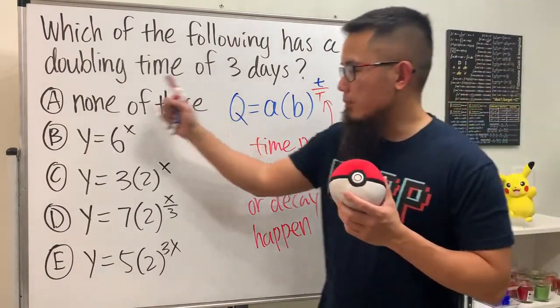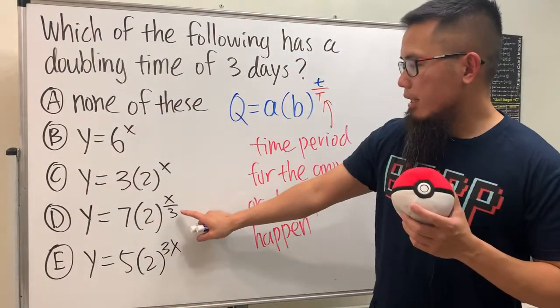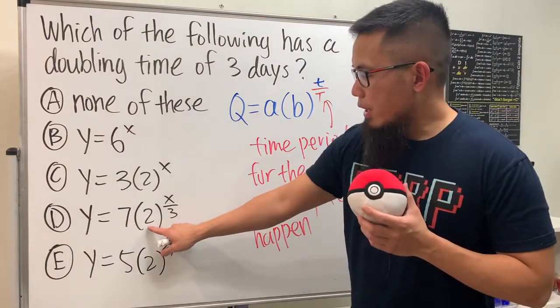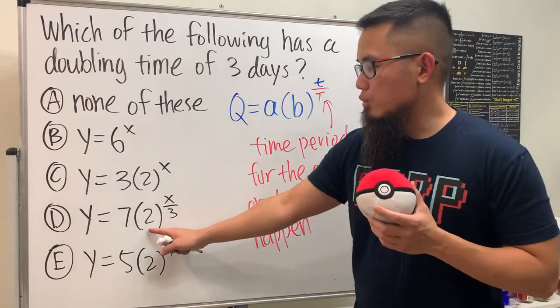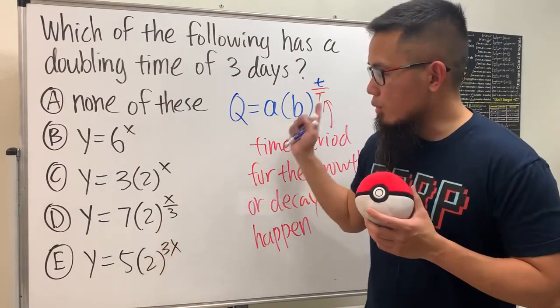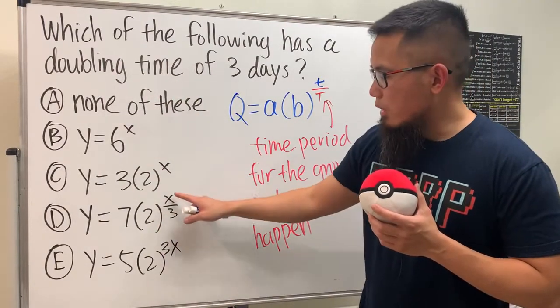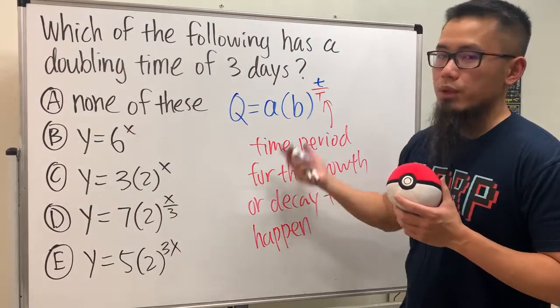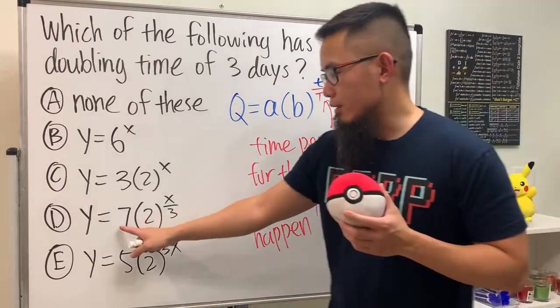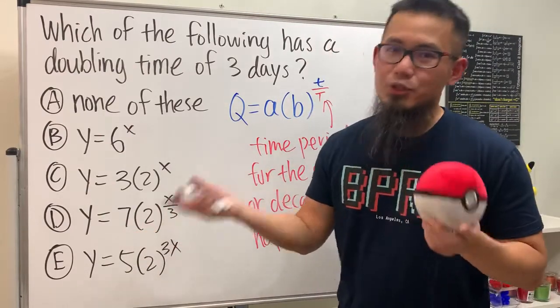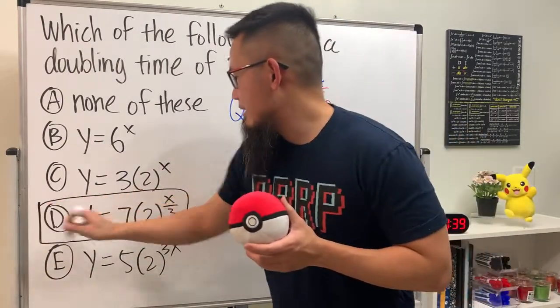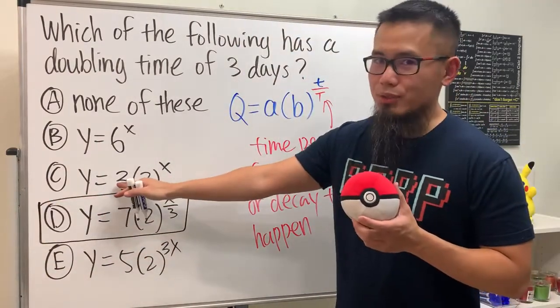And as you can see among all this choice D is it. Two right here is the growth factor which is the two, it's a growth factor that means doubling. And then when we have x over three, this three is exactly the time period for this to be doubled. And the seven is just the initial amount. So all in all D is the answer.